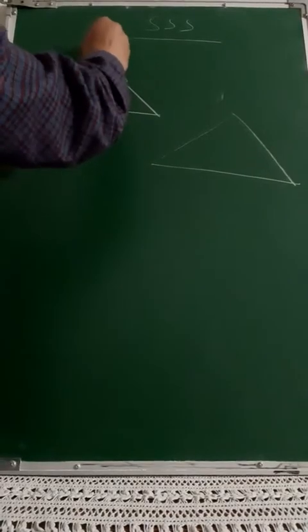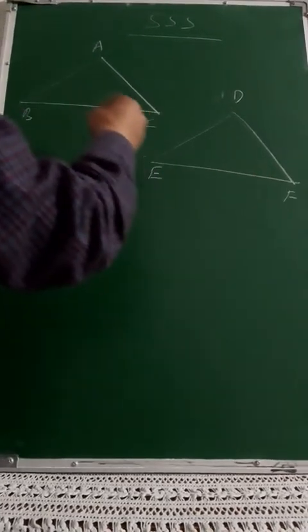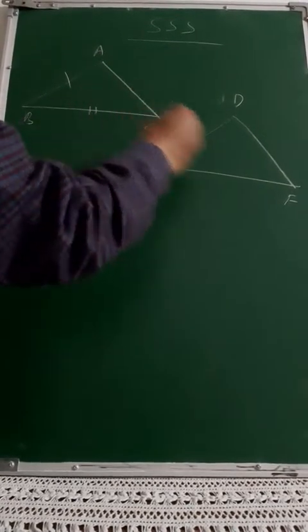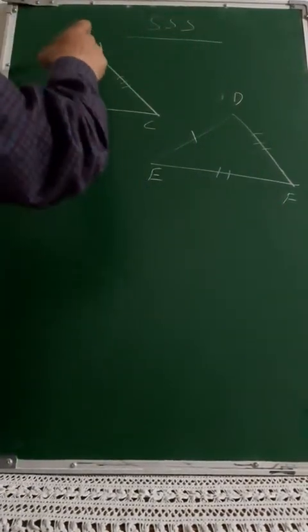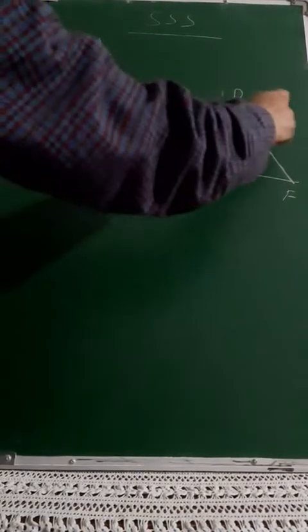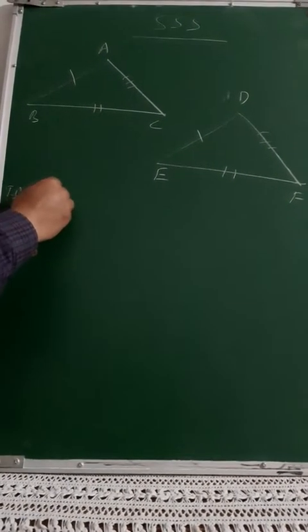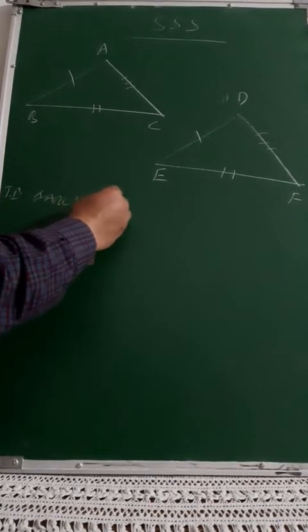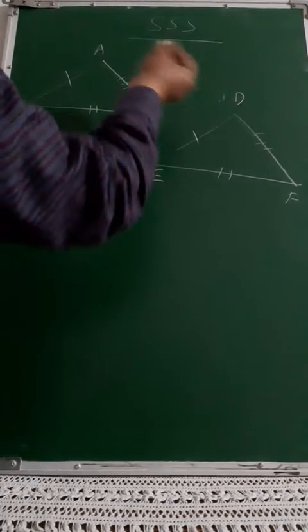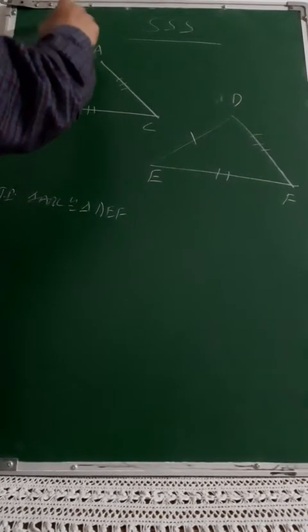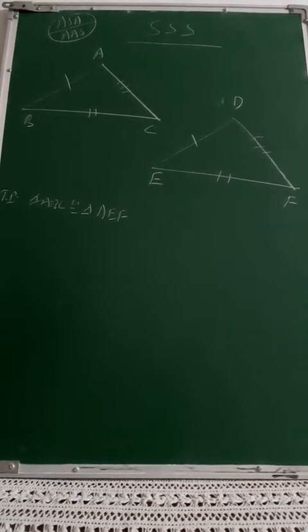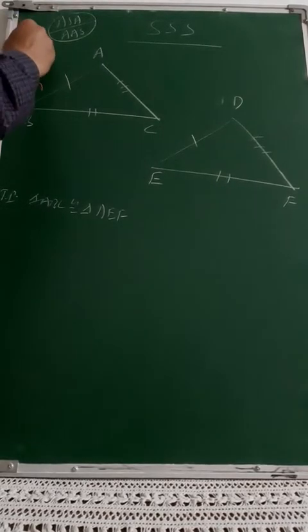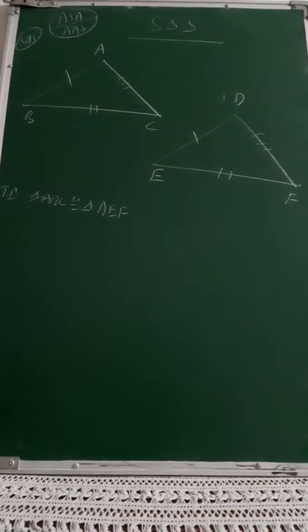We are talking about congruency in triangles. Here are two triangles given to you: one is triangle ABC and another is triangle DEF, in which their corresponding sides are given equal. When you speak about SSS, one side is equal to this, this is equal to this, and this is equal to this. Then I need to prove triangle ABC is congruent to triangle DEF. One proof, that is AAS, is already in your syllabus.